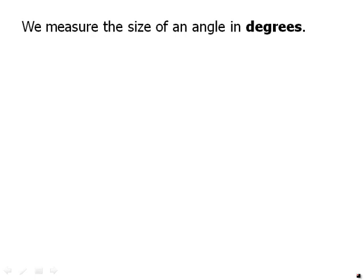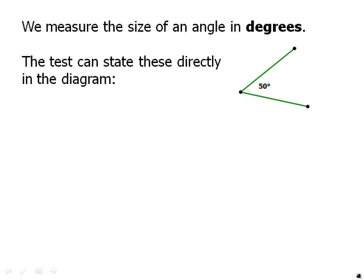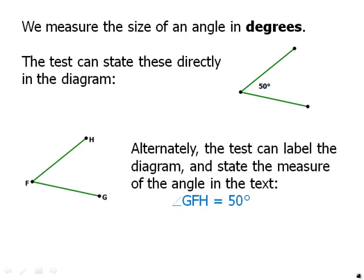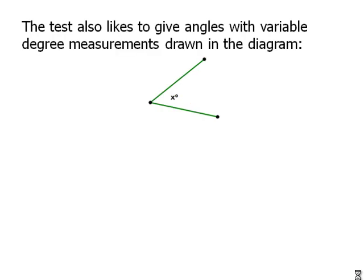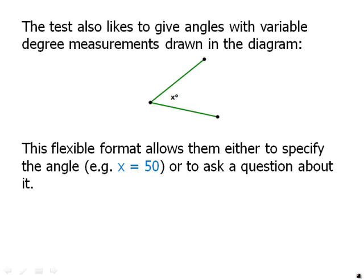We measure the size of an angle in degrees. The test can state these directly, so 50 degrees. Alternately, the test can label the diagram and state the measure of the angle in the text. So angle GFH equals 50 degrees. Because they put letters on the points in the diagram, we can just use that to talk about the measure and the number of degrees in the text. Actually, probably its favorite thing to do is the following. Just specify an angle with a variable number of degrees. This flexible format allows them either to specify the angle, for in the text they could say X equals 50, or they could ask a question about it. They could give us other information and say find X. So they like doing this.